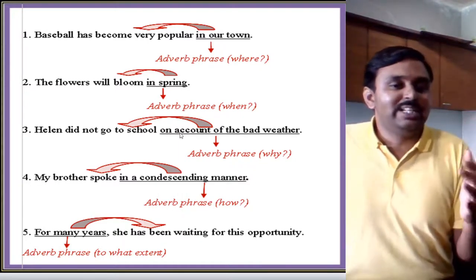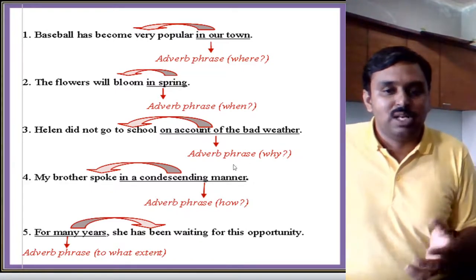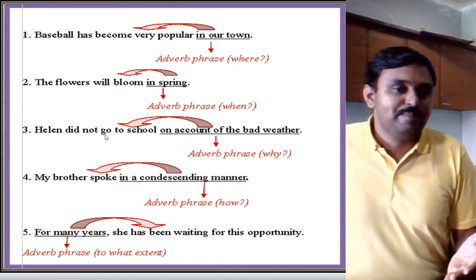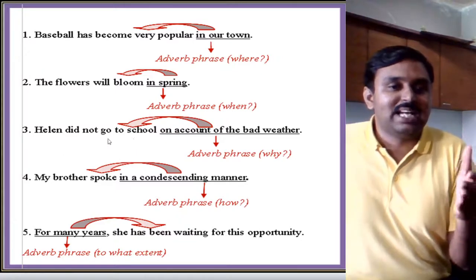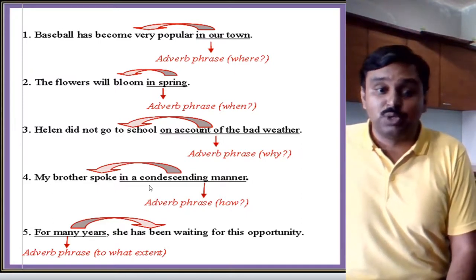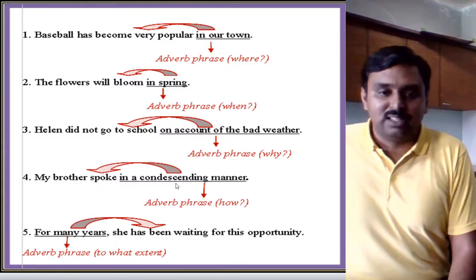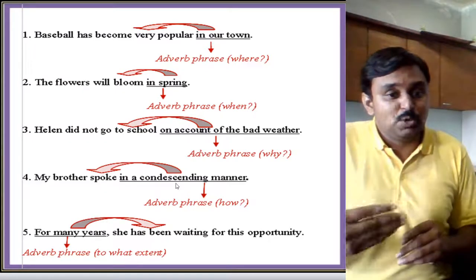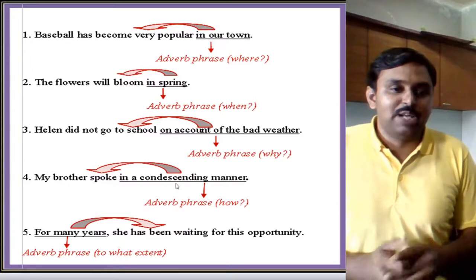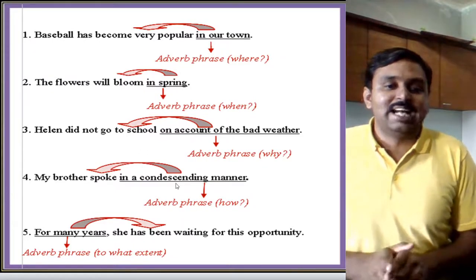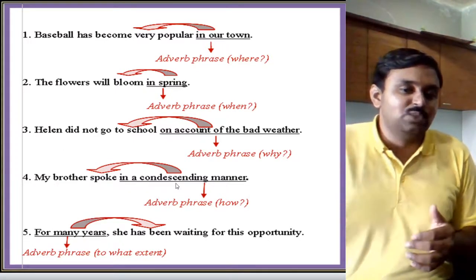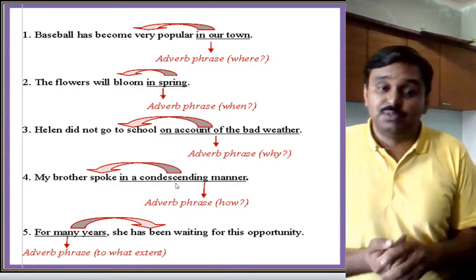Third example: 'Helen did not go to school on account of the bad weather.' Here 'on account of the bad weather' is an adverb phrase because it tells why she did not attend school — 'did not go to school' is the action. Fourth example: 'My brother spoke in a condescending manner.' Here 'spoke' is the action described by the adverb phrase, which tells how it happened. Fifth example: 'For many years she has been waiting for this opportunity.' The action 'waiting' has been described by the adverb phrase 'for many years,' answering to what extent.